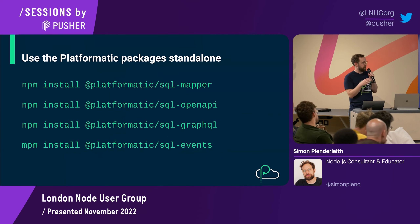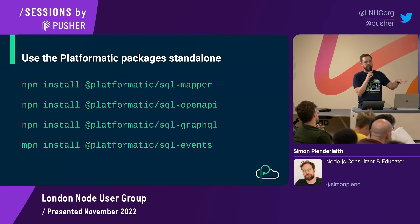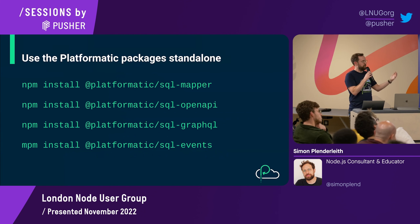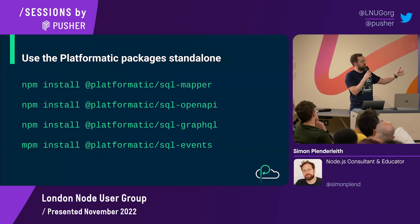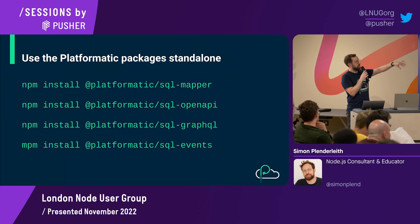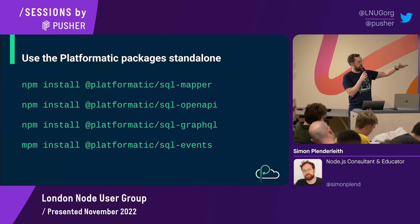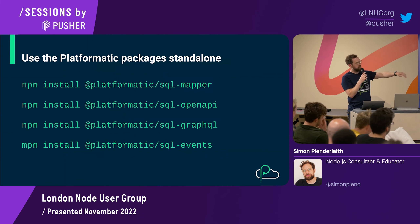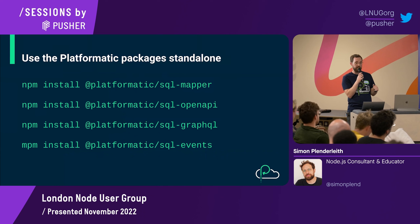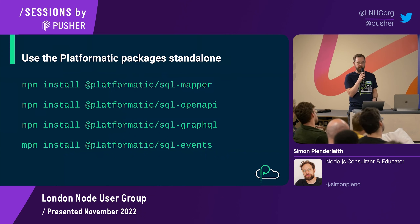The last level of customization — if you really don't want to use PlatformaticDB itself, these are the packages it's built on: the SQL mapper, the OpenAPI parts, the GraphQL parts. There's also a newer one, SQL events, which uses MQ emitter, so you can do server-sent events, web sockets, and GraphQL subscriptions.